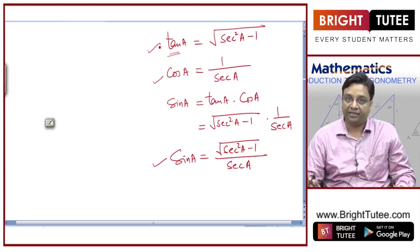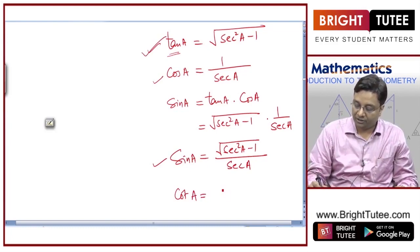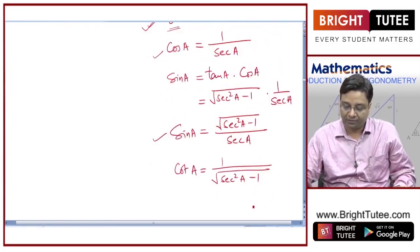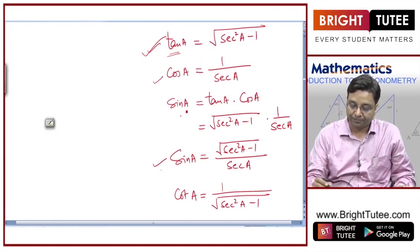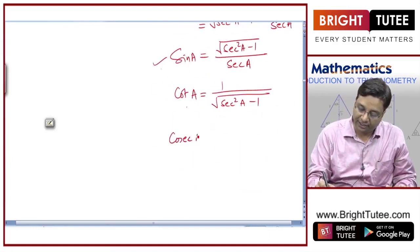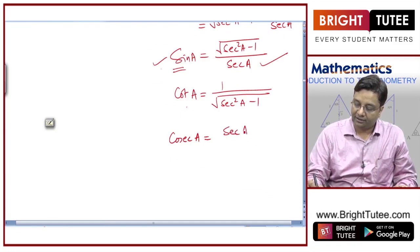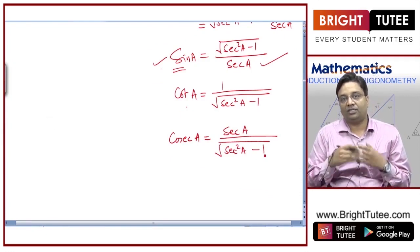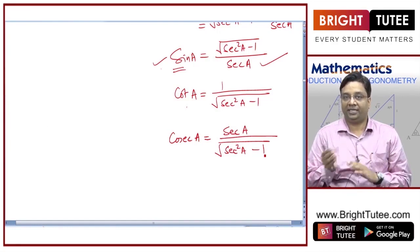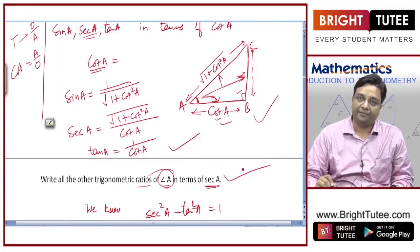Cot a is the reciprocal of tan a, so it can be written as one by square root of secant squared a minus one. Cosecant a is left — it is the reciprocal of sin a, so cosecant a equals secant a divided by square root of secant squared a minus one. All trigonometric ratios have now been written in terms of secant a.